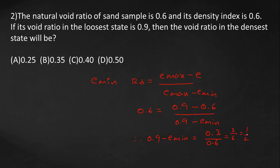Therefore, 0.9 minus emin equals 0.3 by 0.6, which equals 1 by 2. So the answer is C.